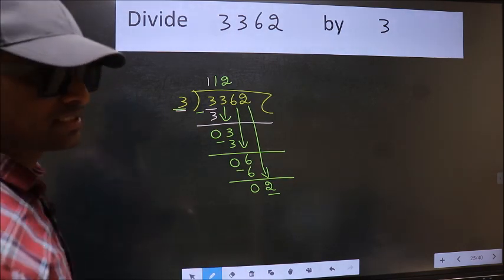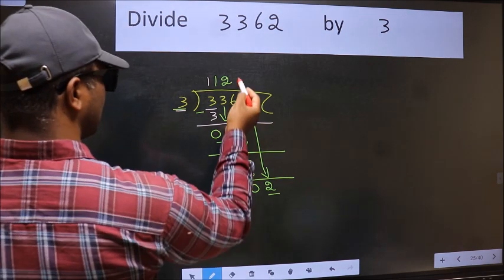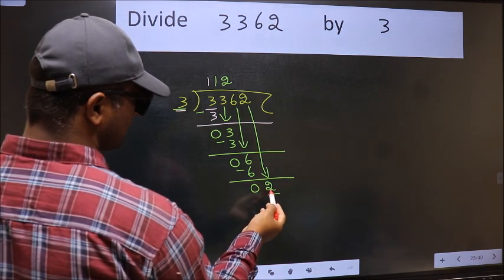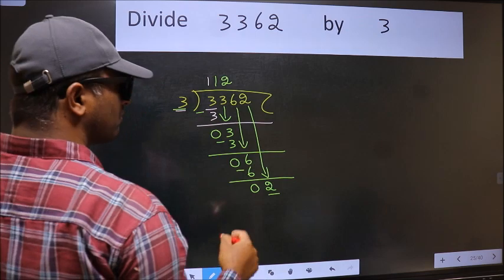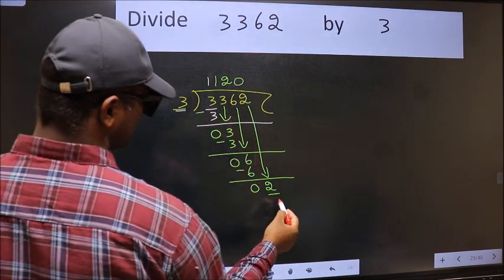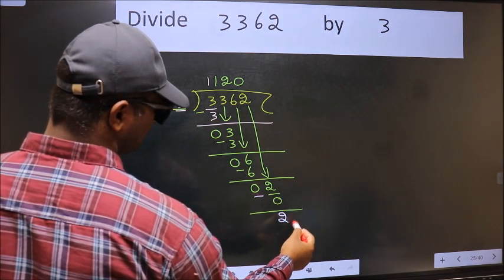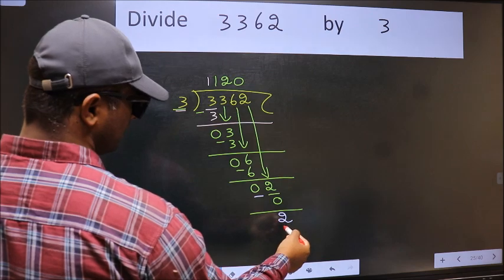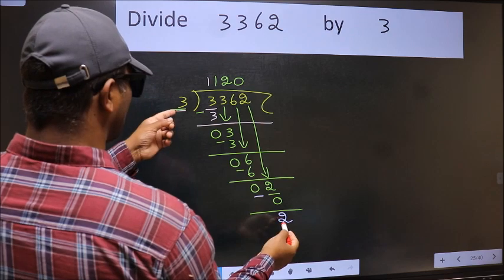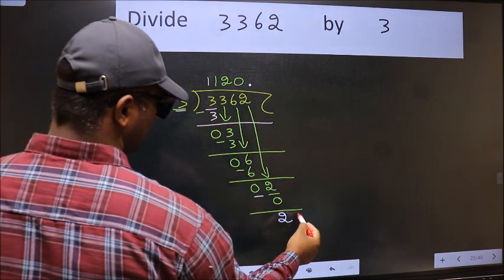Instead of that, what you should think of doing is: which number should we take here? If I take 1, we will get 3, but 3 is larger than 2. So what we should do is, we should take 0. So 3 into 0 is 0. Now we should subtract. We get 2. Over here, we did not bring any number down, and 2 is smaller than 3.